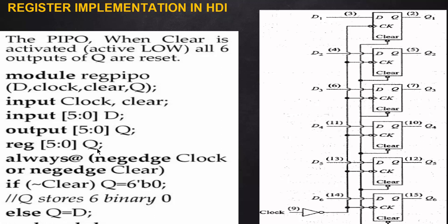Since q is used for output, it must be declared as a register type variable. In the always block, it triggers on the negative edge of the clock, meaning data transfers to the flip-flop output during the negative clock edge — this is a negative edge triggering flip-flop.